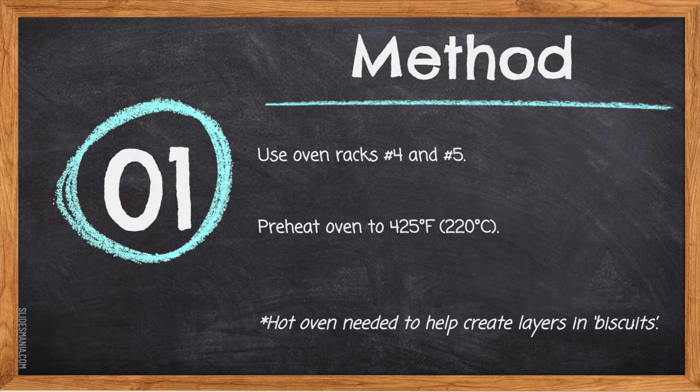Step 1: Use oven racks number four and number five. Preheat oven to 425 degrees Fahrenheit (220 degrees Celsius). A hot oven is needed to help create layers in biscuits.